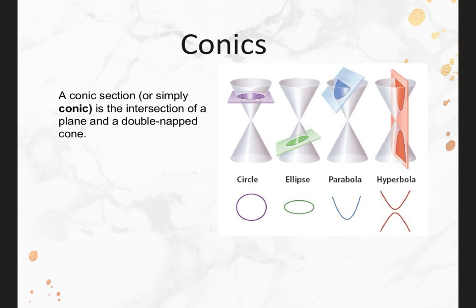A cone or double-napped cone is like an hourglass. If you take a plane and slide it through horizontally like that purple one, you get a perfectly rounded circle. If you slide it at a diagonal like the green one, you get an ellipse, which is really just an oval. If you cut the edge of it, you get a parabola. And if you slide it through vertically, you get a hyperbola, which is basically like two parabolas turned up and down.